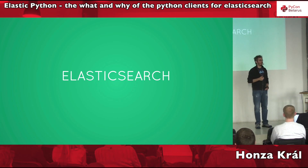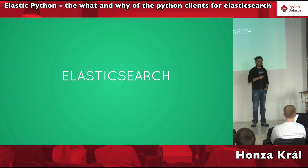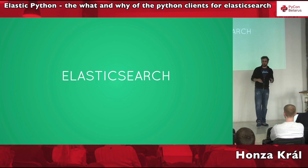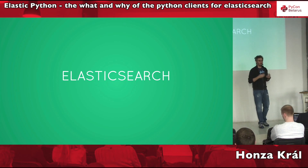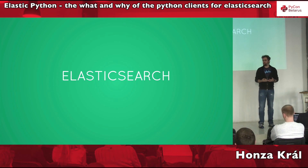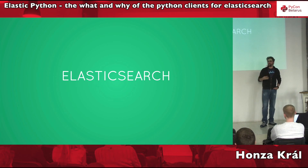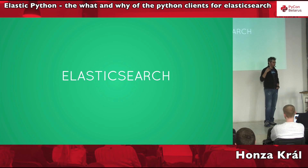It is a search and analytics engine. We had a tough time defining what Elasticsearch is — is it a database? Not really. Is it a search engine? Sure. Is it an analytics engine? Sure. Essentially, Elasticsearch is a piece of software you can run on one or multiple machines. You can store data in it, search the data using both structured and unstructured search — normal filtering but also full text searching — and you can analyze the data by aggregating, slicing, dicing them, which is very useful for visualizations and data exploration.